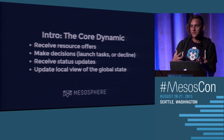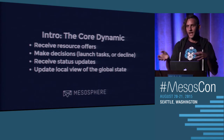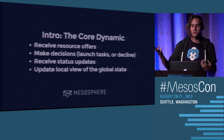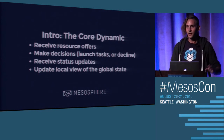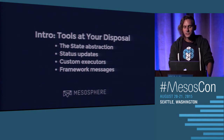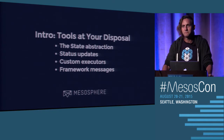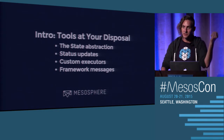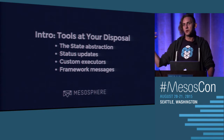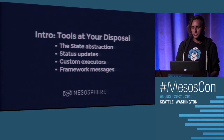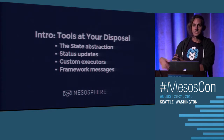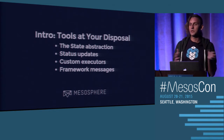Once tasks are running, you get status updates. It's your scheduler's responsibility to update your local view of the global state — all your tasks, what's running where, what's completed, what's failing. Then, with that status, you make decisions on future resource offers. Mesos provides a state abstraction so you can store your framework ID and task statuses off the node so it persists even if your scheduler fails over. We also provide status updates from an executor, tools for building custom executors, and framework messages so schedulers and executors can communicate back and forth.